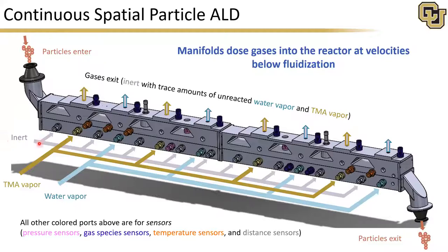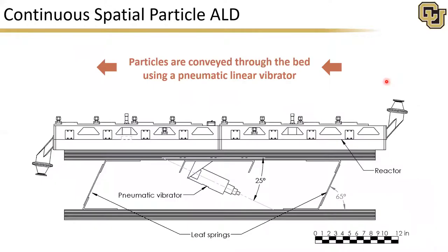These manifolds dose gases into the reactor at velocities below fluidization. The particles themselves are conveyed through the bed using a process called vibratory convection. Essentially, we have a pneumatic vibrator — a self-reversing piston — that oscillates the reactor bed, supported on a pair of leaf springs, and these oscillations induce net forward motion of the particles through the reactor.